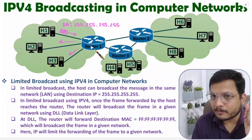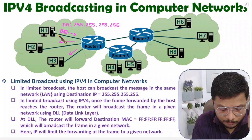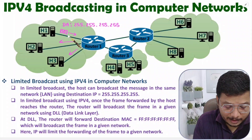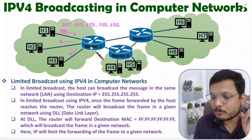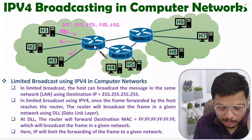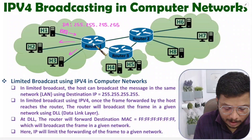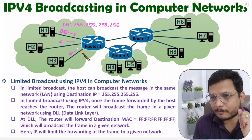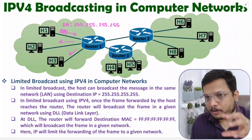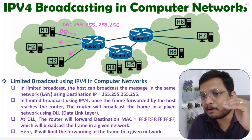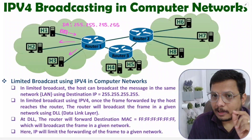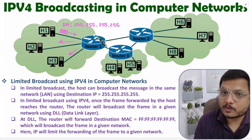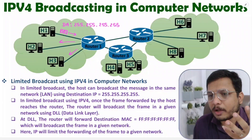Router one is an intelligent device. It will see the incoming frame from host one, and once it sees the destination IP is 255.255.255.255, router one will know that this frame belongs to broadcast in this network. Router one will broadcast this frame using the data link layer. Whenever you form a frame, at the network layer we add IP address, and at the data link layer we add MAC address.